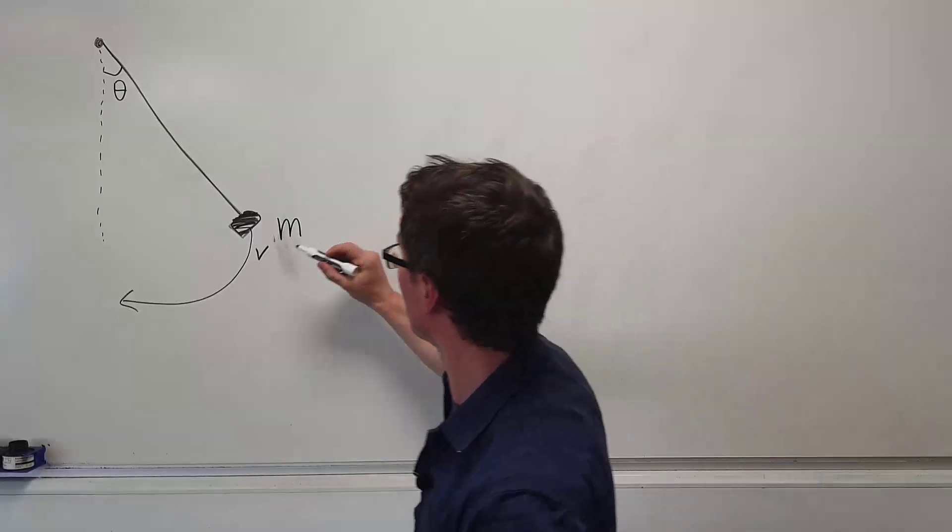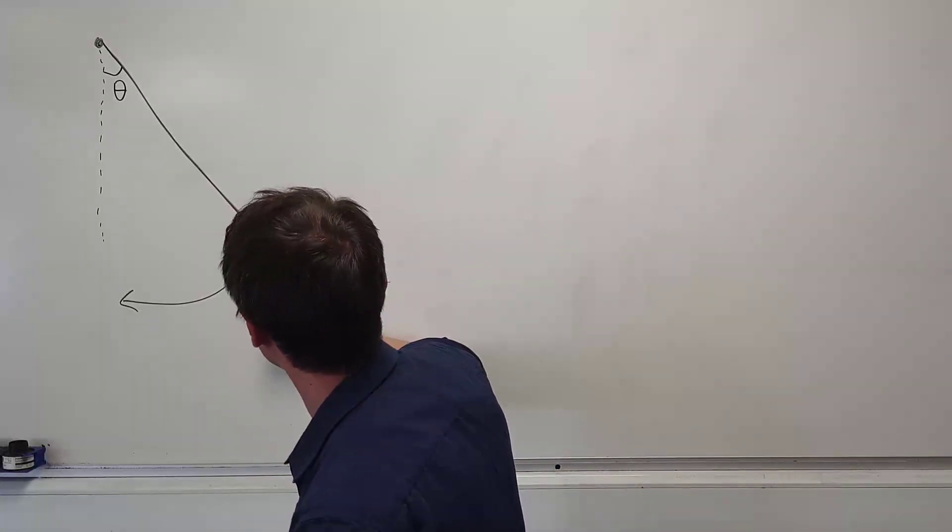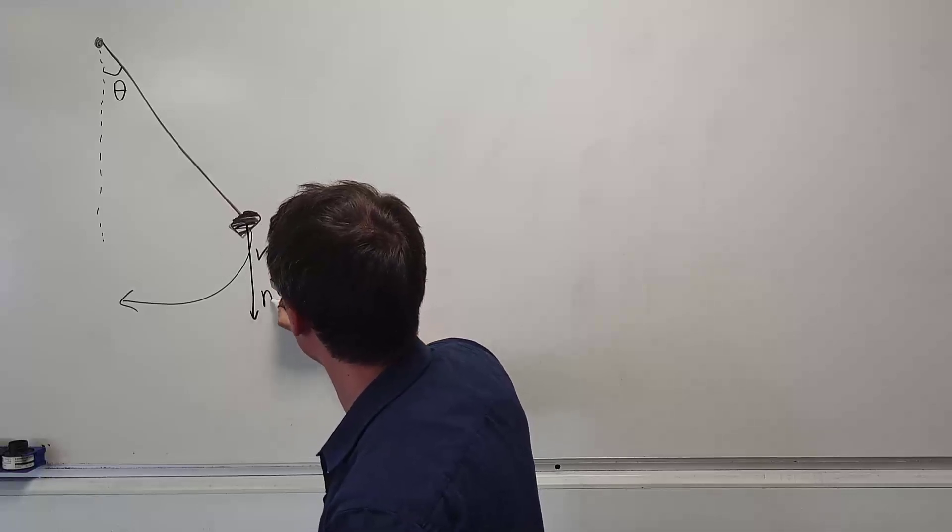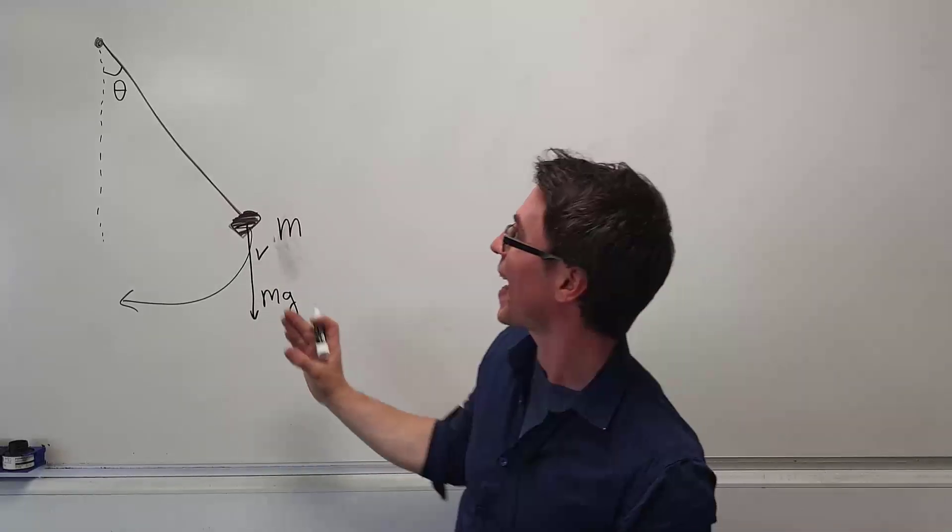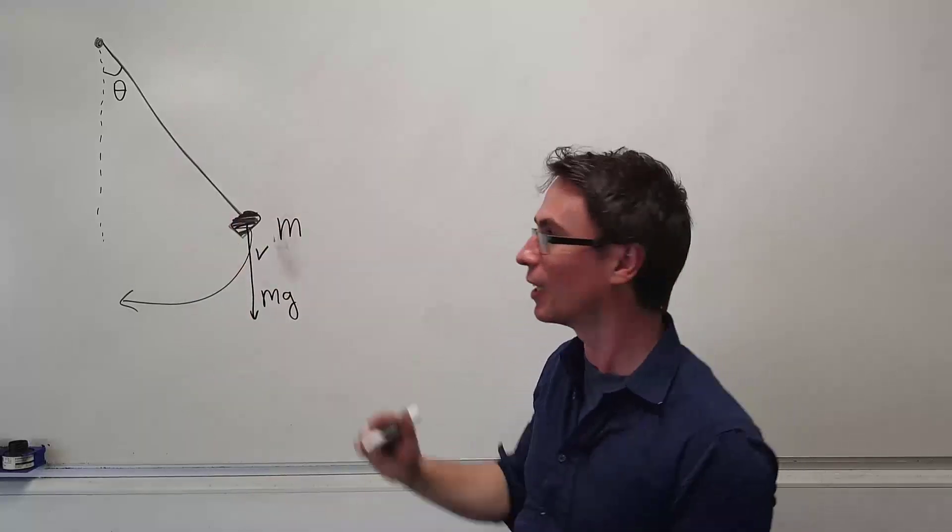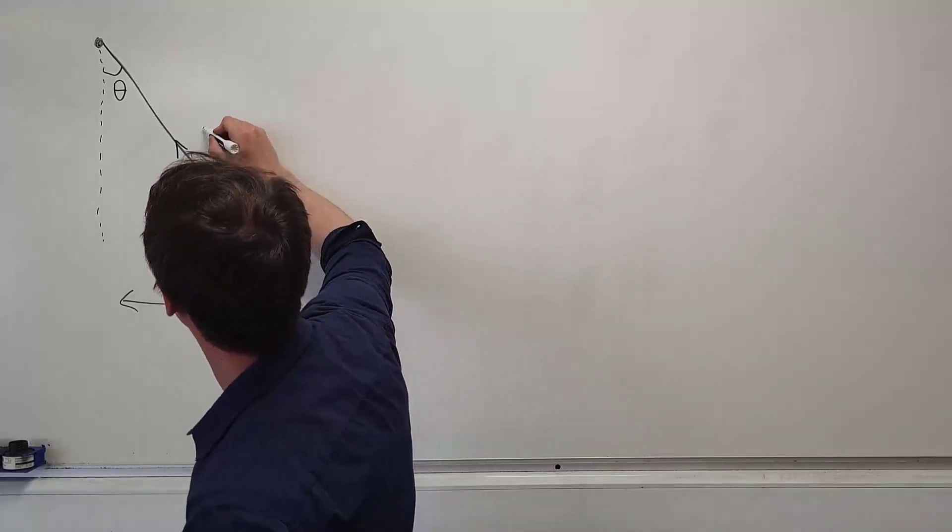First of all we have the weight which is acting vertically downwards, let's call that mg. But we also have the force of tension which is acting at some angle theta.